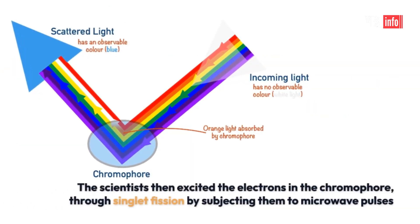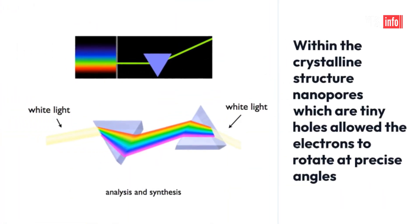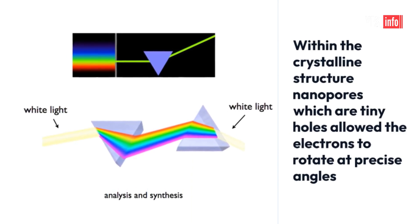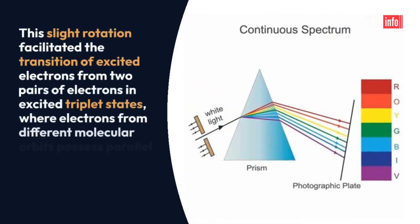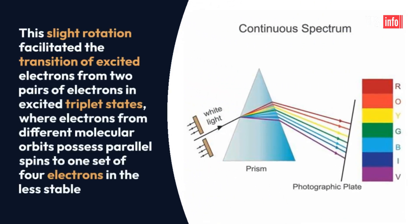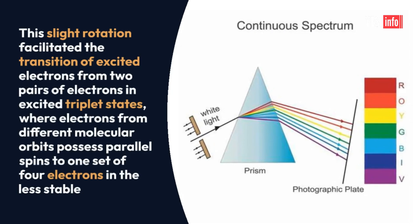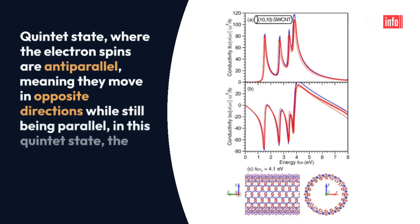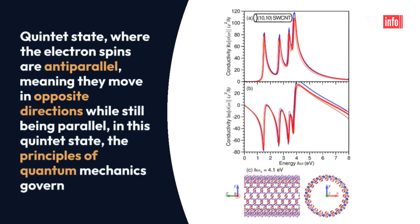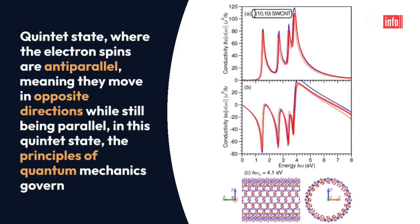The scientists then excited the electrons in the chromophore through singlet fission by subjecting them to microwave pulses. Within the crystalline structure, nanopores — which are tiny holes — allowed the electrons to rotate at precise angles. This slight rotation facilitated the transition of excited electrons from two pairs of electrons in excited triplet states, where electrons from different molecular orbits possess parallel spins, to one set of four electrons in the less stable quintet state, where the electron spins are antiparallel — meaning they move in opposite directions while still being parallel. In this quintet state, the principles of quantum mechanics govern.